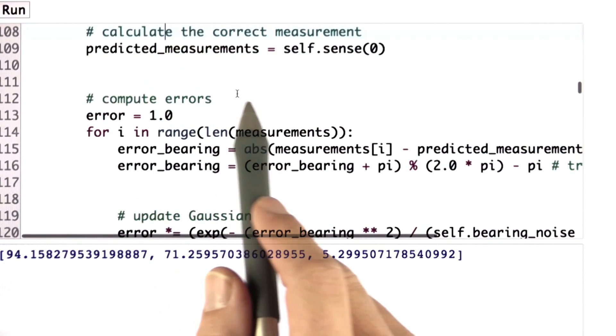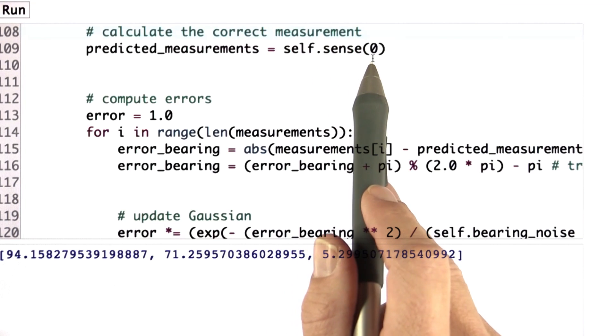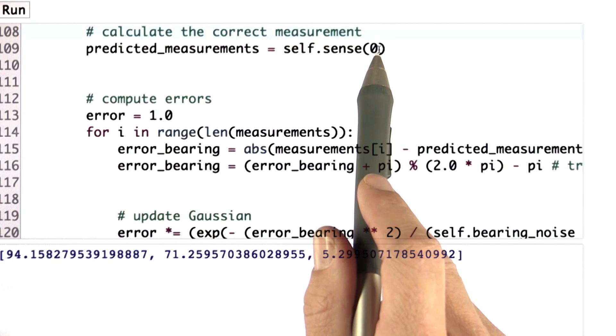What's important is a little modification to the sense function that you haven't seen before. I can now give the sense function a parameter, and I give it a parameter zero. It switches off the noise model. So you will need the noise model for forward simulation of the robot.